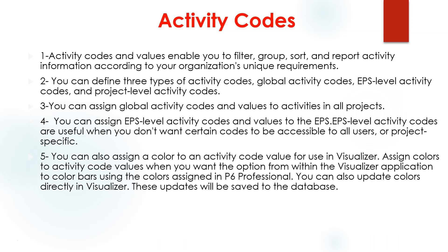In this lecture you're going to learn how to assign activity codes, why it is important, and how you can do it. Activity codes enable you to filter, group, and sort activities. You can add many codes — for example, a code for excavations, a code for concrete, a code for design activities — and you can filter all these codes. You can assign codes at the project, globals, or EPS levels.